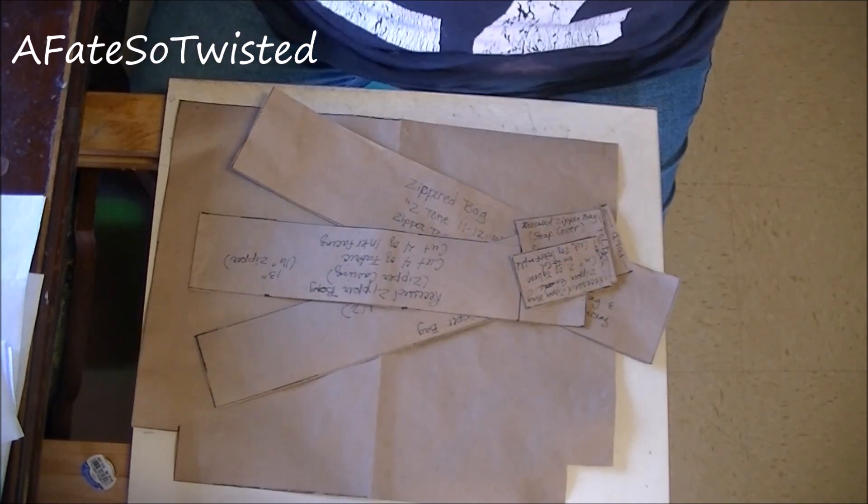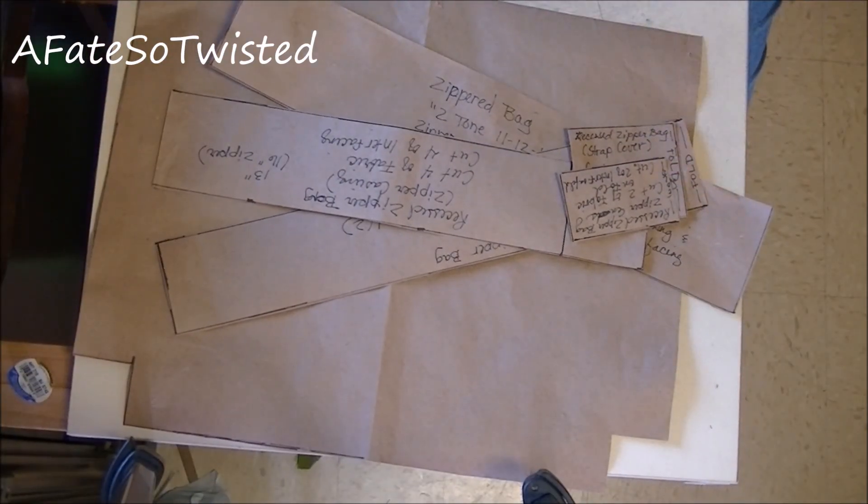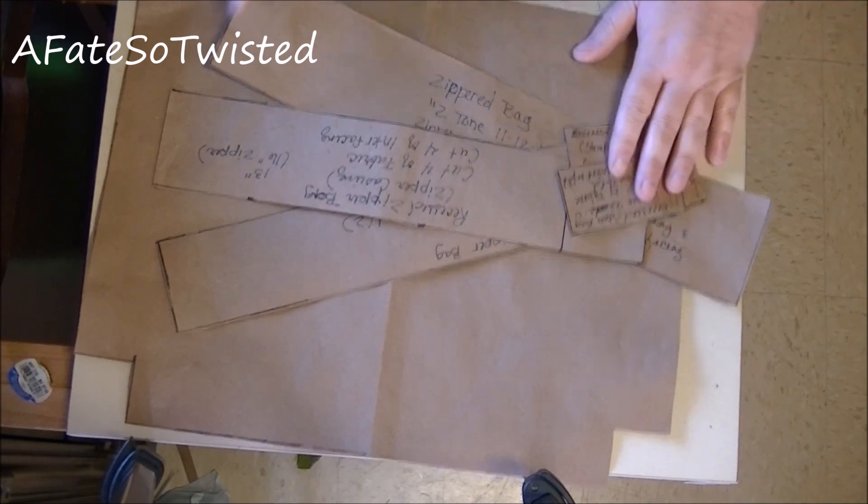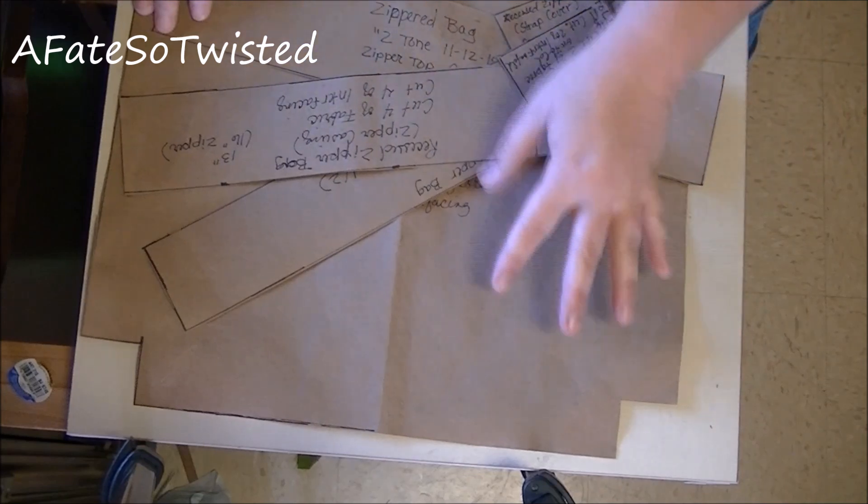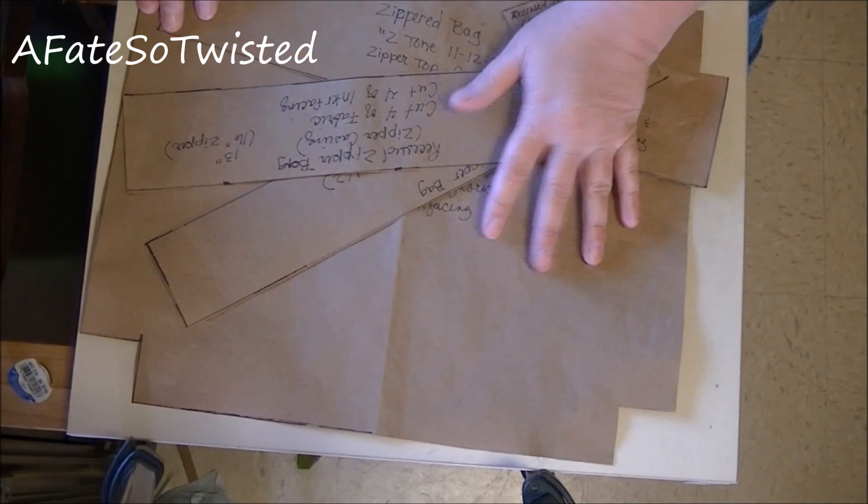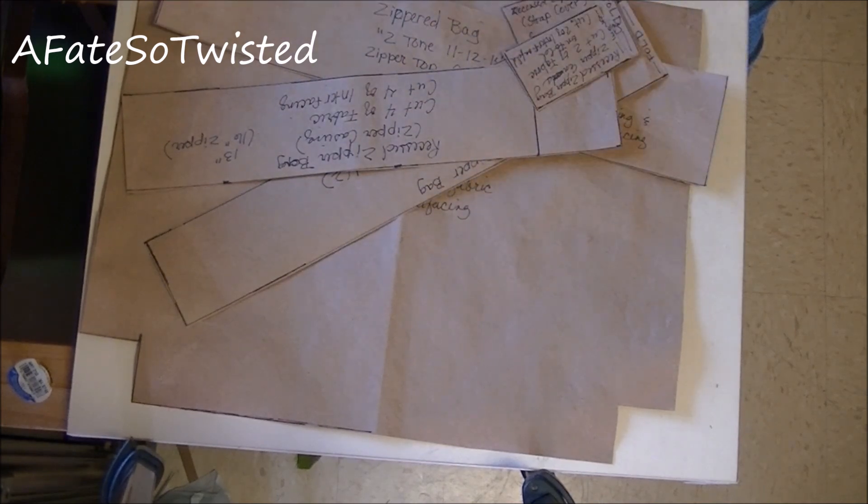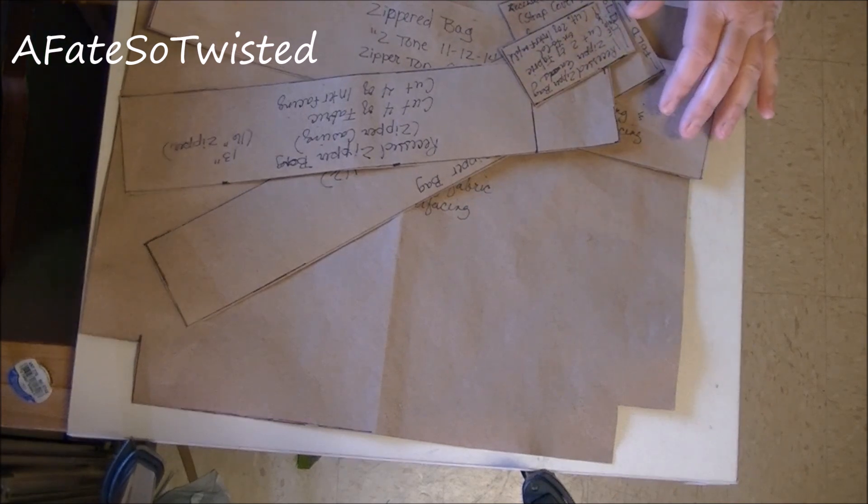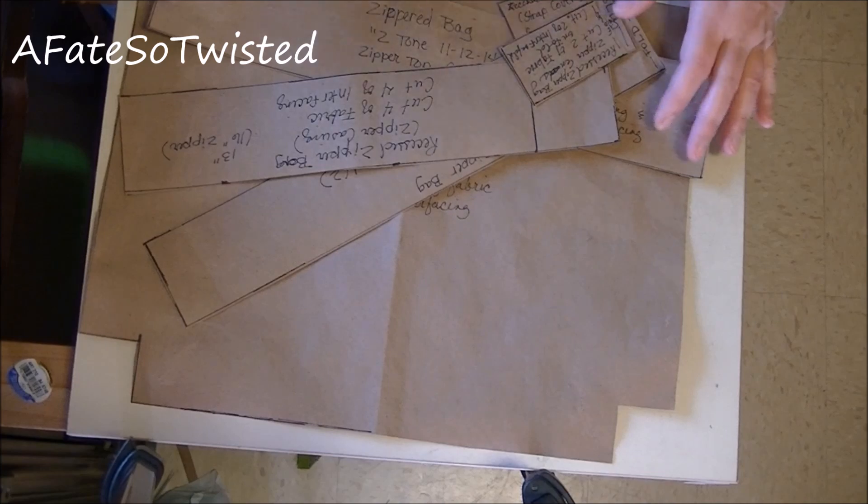Now, the first thing we need to do to make this bag with the recessed zipper is to create our pattern pieces. Actually, the body piece and a couple of the other pieces, I used the pattern pieces that I used for the zippered bag with the top band on it. It's just a couple of tiny little modifications that you have to do when you're cutting the pattern pieces out.